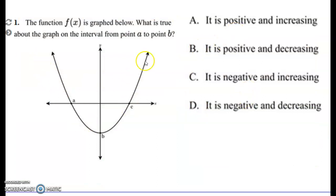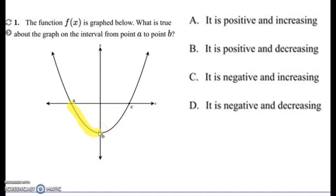Here's a multiple choice example. They give you the function and the interval between point A and point B. We need to find what's happening between A and B. It's either positive or negative, and either going up or going down. We can see it's in the negative part and it's going down, so it's negative and decreasing.